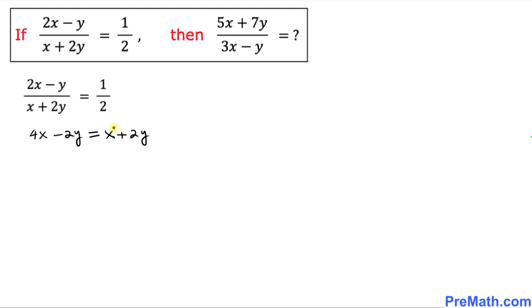In the next step, we combine x variables on one side and y variables on the other side. Moving x to the left and -2y to the right, we get 4x - x = 2y + 2y, which simplifies to 3x = 4y.